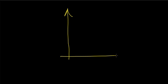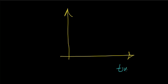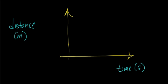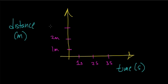Let's clear up some workspace and start drawing these graphs. This is the distance versus time graph. On the horizontal axis is time, in units of seconds — so this point is one second, this is two seconds, this is three seconds. On the vertical axis is distance, in units of meters — so this would be one meter, two meters, three meters.